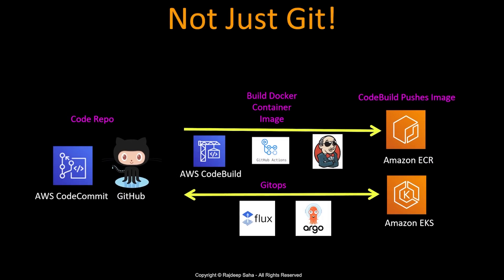So one misconception is that GitOps can only work with GitHub — which is not true. GitOps can also work with code repositories such as AWS CodeCommit. And remember, GitOps only takes care of the CD part, not the CI part. The CI part you can do with any of your existing CI tools such as AWS CodeBuild, GitHub Actions, or Jenkins.